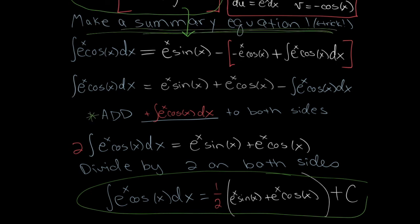The whole trick to this type of problem — where nothing gets simpler and you're going in circles — is to make a summary equation and then add something to both sides to consolidate the integrals. This is an exotic extra problem, but remember that examples one and two are the main focus for integration by parts. Integration by parts is essentially the product rule backwards — I hope you enjoyed this video and we'll see you soon.